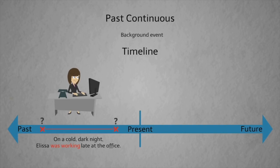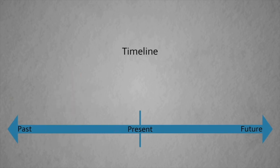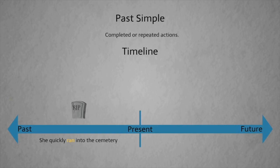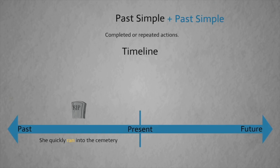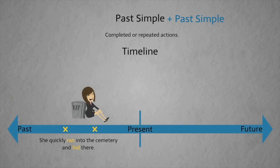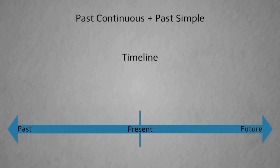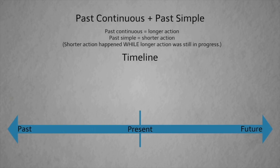Past simple is used for completed or repeated actions — 'she quickly ran into the cemetery' — this action is finished. When two past simple actions are used together, the second happened after the first: she ran in, then hid. We can combine past continuous and past simple: the past continuous refers to a longer background action; the past simple refers to a shorter action that happened while the longer action was still in progress.